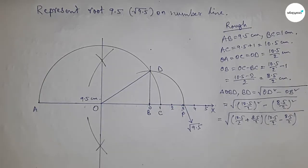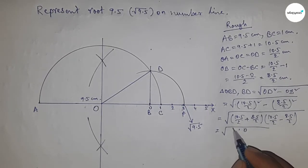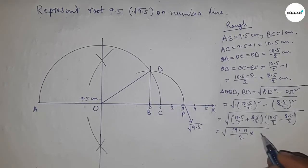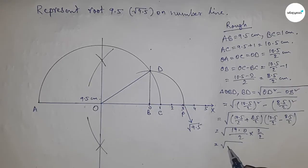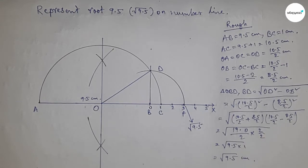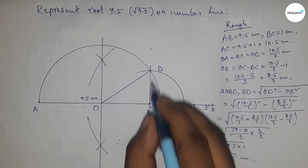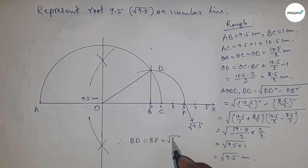This equals (19/2) × 1 = 9.5, so BD = √9.5 cm. Therefore, distances BD and BP are equal to √9.5 cm.